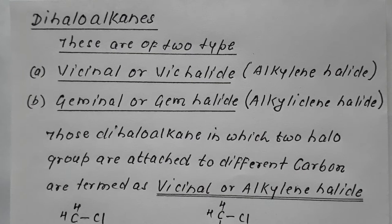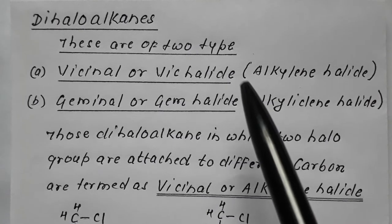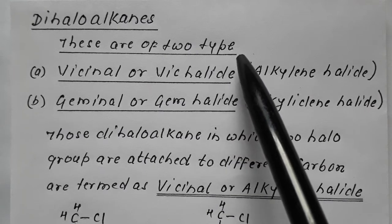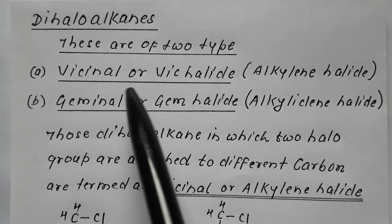Hello dear students, welcome to Chemistry Fundamentals. I'm Dr. Rajiv Oberoi. Today we are dealing with dihaloalkanes. Remember, dihaloalkanes are of two types: one is called vicinal or vic-halide, and the other is termed geminal or gem-halide.